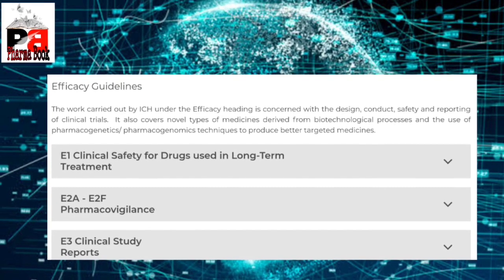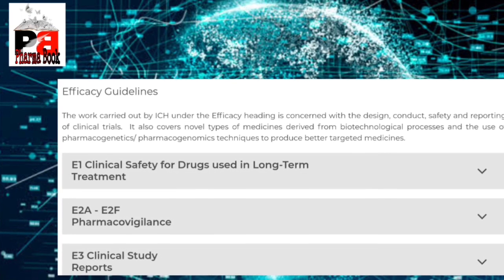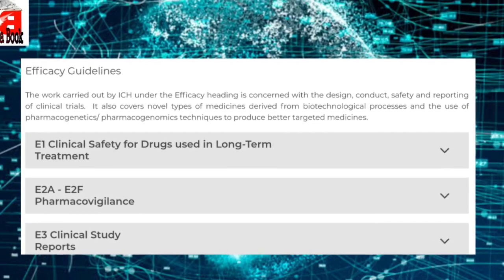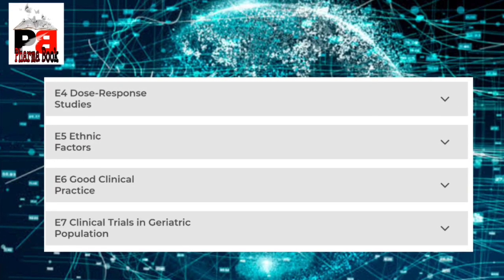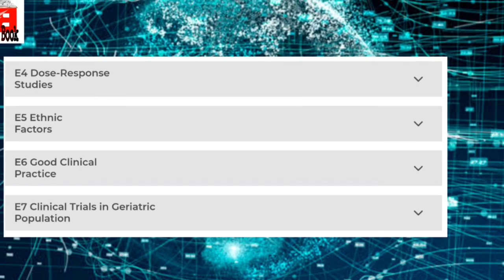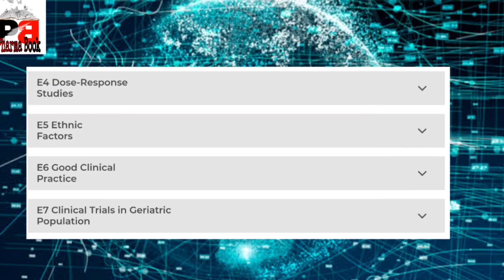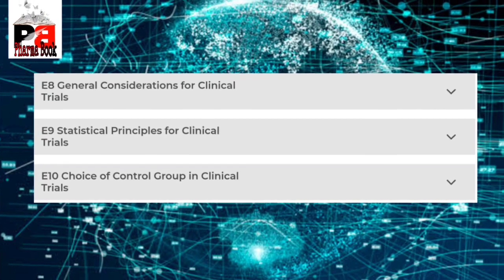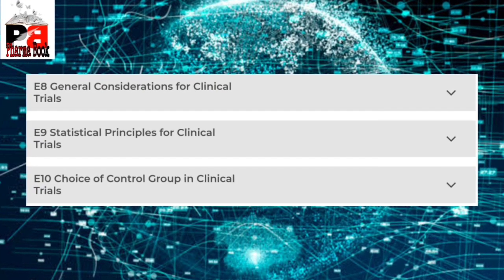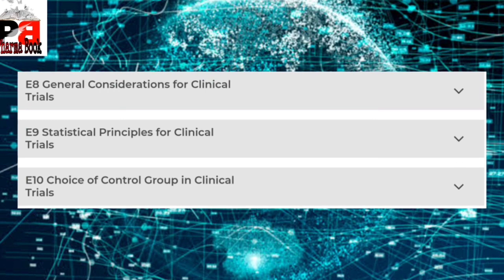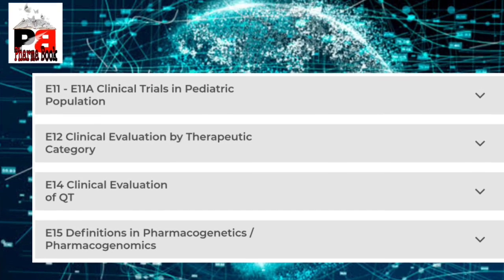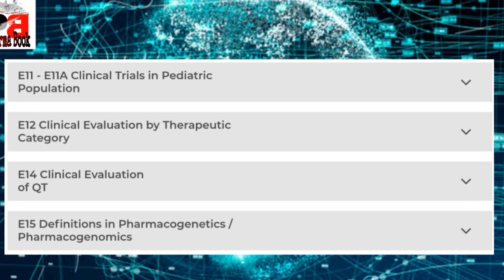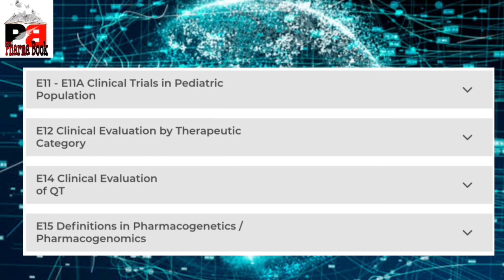E means Efficacy. The efficacy guidelines cover conduct and safety reporting of clinical trials: E1 Clinical Safety for Drugs Used in Long-term Treatment, E2 Pharmacovigilance, E3 Clinical Study Reports, E4 Dose Response Studies, E5 Ethnic Factors, E6 Good Clinical Practices, E7 Clinical Trials in Geriatric Population, E8 General Considerations for Clinical Trials, E9 Statistical Principles for Clinical Trials, E10 Choice of Control Group in Clinical Trials, E11 Clinical Trials in Pediatric Population.